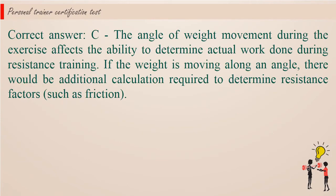Correct answer c. The angle of weight movement during the exercise affects the ability to determine actual work done during resistance training. If the weight is moving along an angle, there would be additional calculation required to determine resistance factors, such as friction.